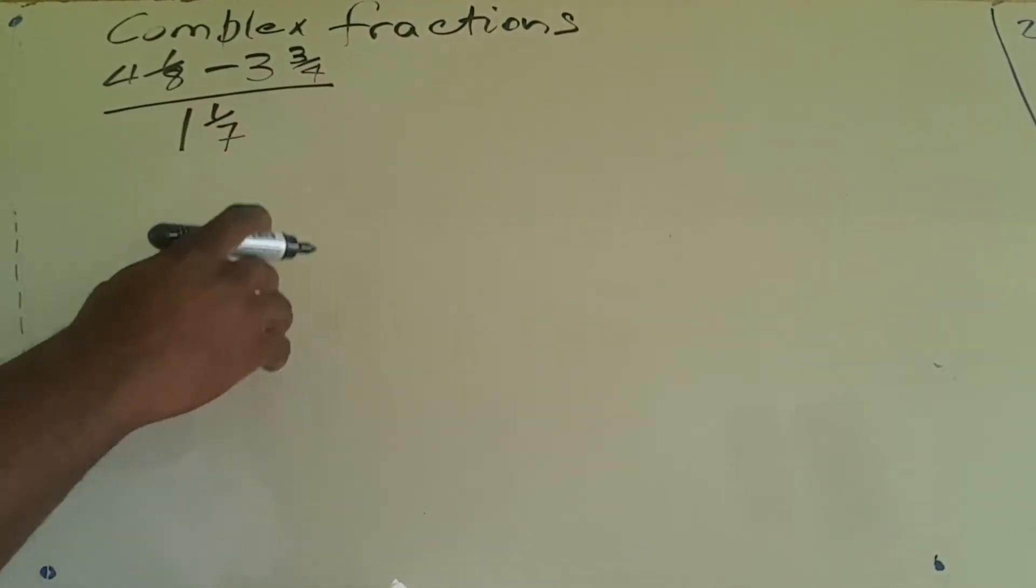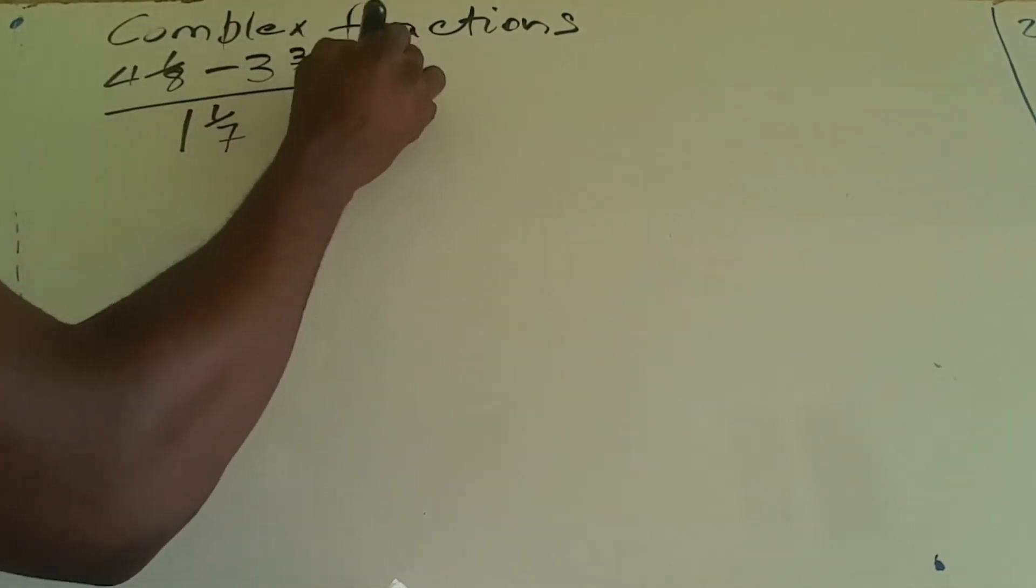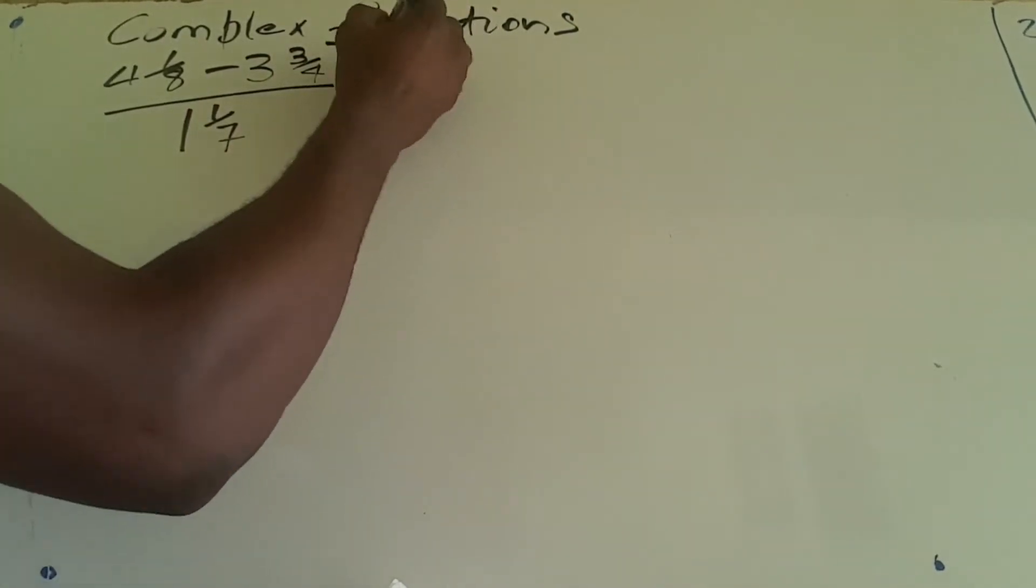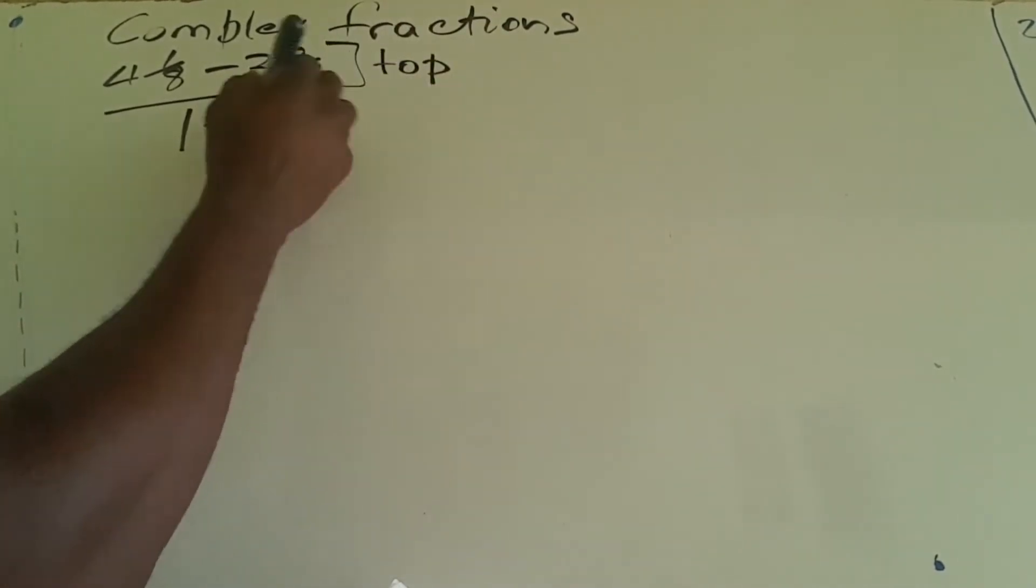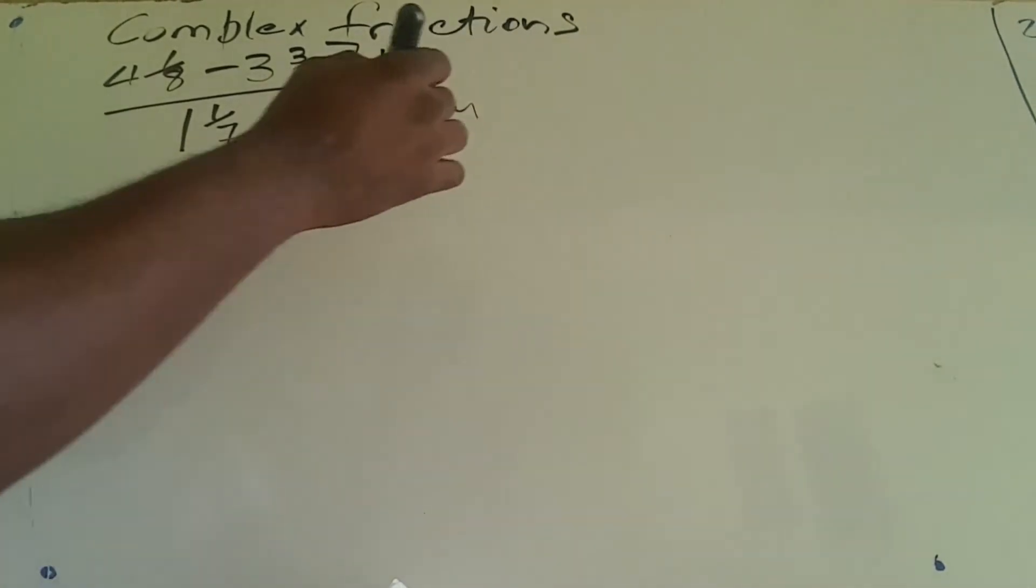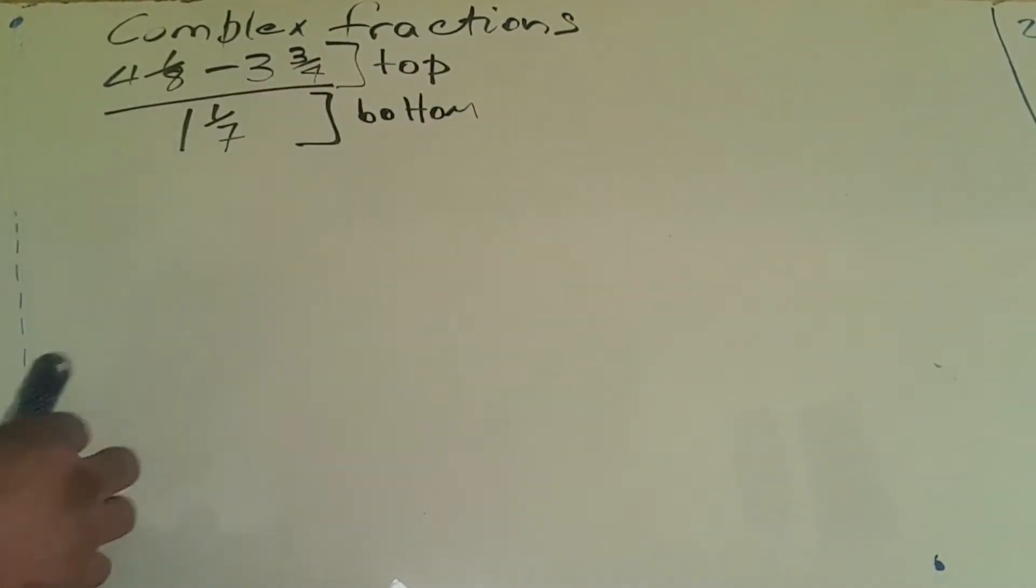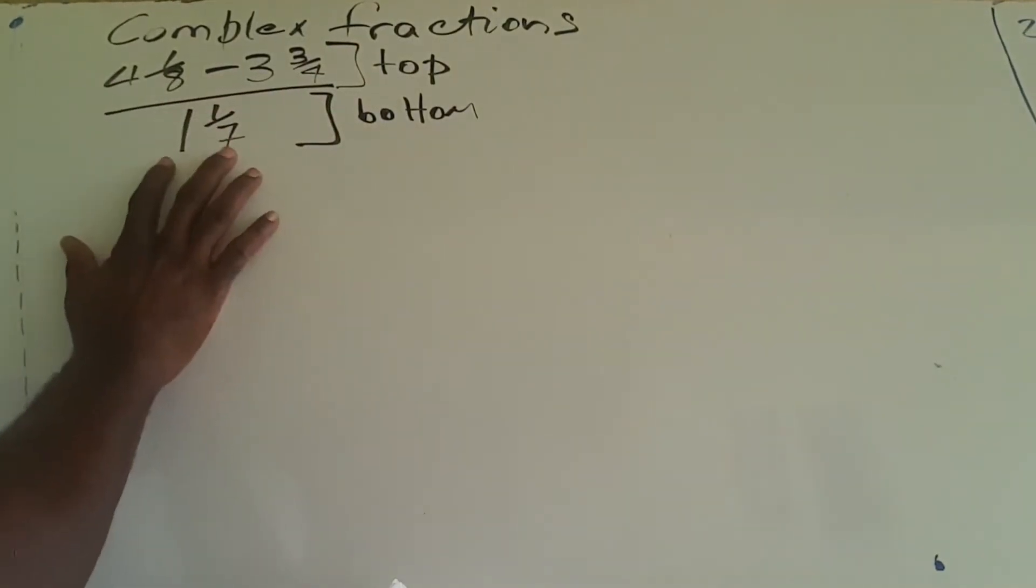If we look at this complex fraction, it consists of two parts. There's a part in the numerator—I call this the top part—and then there's a section in the denominator—I call this the bottom part. With these complex fractions, what we have to do is the numerator divided by the denominator.